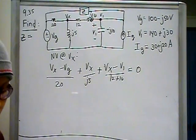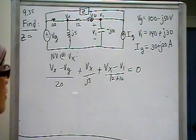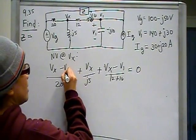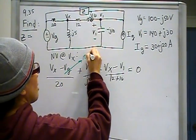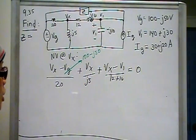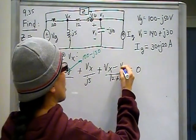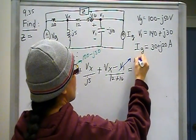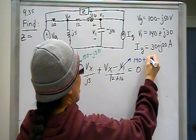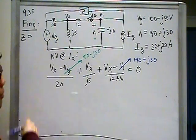Well, when I did that I realized there's a whole bunch of stuff that they gave me. They told me this was 100 minus j50, so that's my Vg. I have that information. And the other thing that they told me was what V1 was. V1 is right here, and that's 140 plus j30. So then I realized, they gave me all the information that I need. This is one equation, one unknown. I can find that Vx.